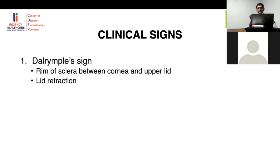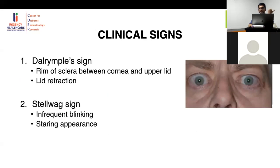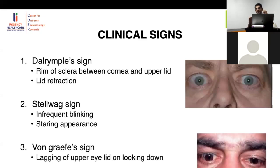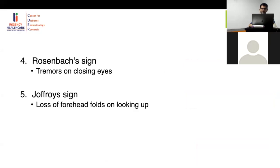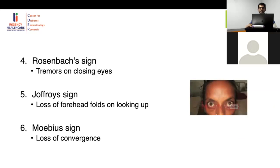For clinical eye signs: if there is white sclera visible between the cornea and upper lid, this is lid retraction — Dalrymple sign. Infrequent blinking and a staring appearance are also characteristic. Von Graefe sign: ask the patient to look down — if upper sclera is visible, there is lid lag. Rosenbach sign: ask the patient to close eyes — there will be tremors of the eyelids. Joffroy sign: ask the patient to look up — forehead furrows will be absent. Möbius sign: loss of convergence. These signs help diagnose orbitopathy.